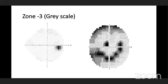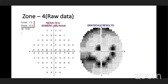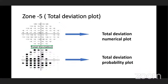Zone four is raw data, assessed based on subjective response — showing how much retinal sensitivity is present. Zone five is the total deviation plot, which has two subtypes: total deviation numerical plot and total deviation probability plot.